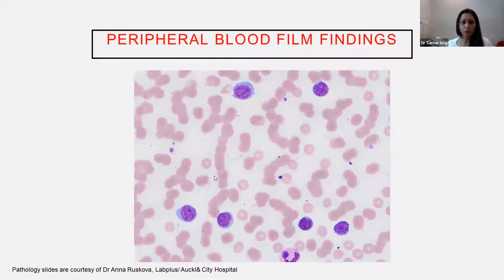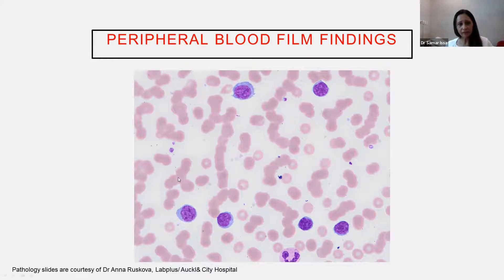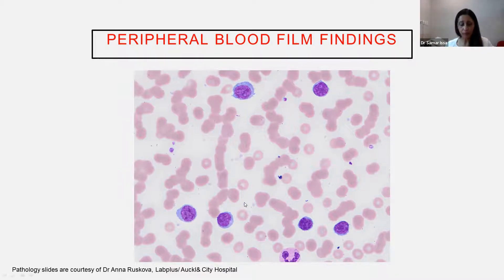This is what rouleaux formation looks like — the red cells stick to each other on a blood film, courtesy of Dr. Anna Reskova, haematologist at LaboPlus in Auckland City Hospital, who provided these slides. These are the rouleaux: red cells stick to each other because of the high viscosity from increased macroglobulin levels. And these are lymphoplasmacytic cells seen in the peripheral blood — abnormal increase in the number of cells.